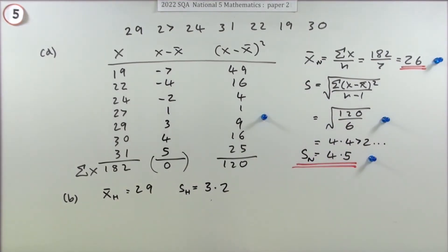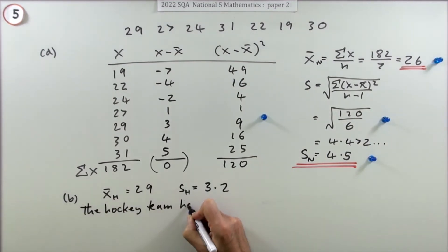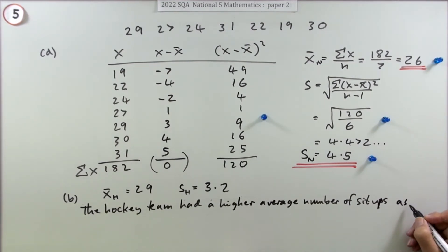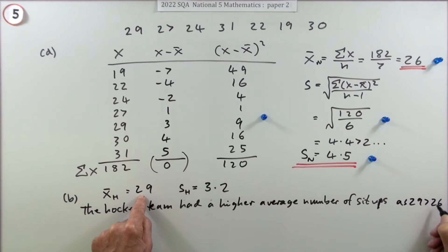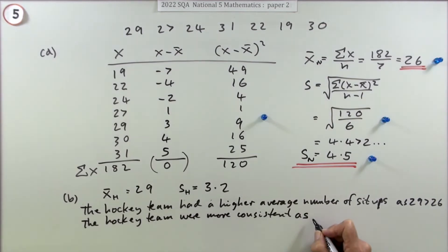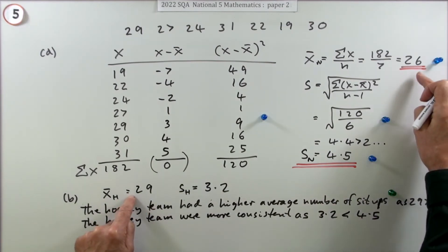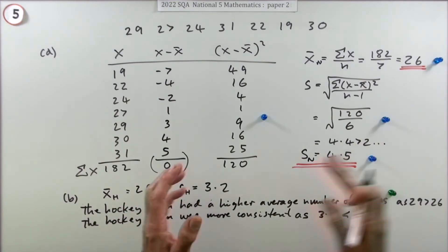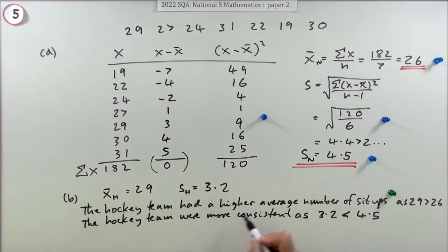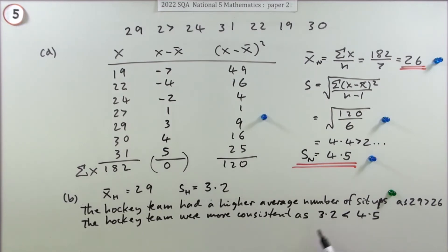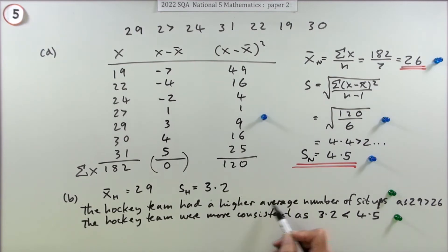For the final two marks you must make two comparisons. First: the hockey team had a higher average number of sit-ups because their mean, 29, is greater than 26. Second: the hockey team were more consistent as their standard deviation, 3.2, is less than the netball team's standard deviation of 4.5. One mark each. You should always include the numerical justification.